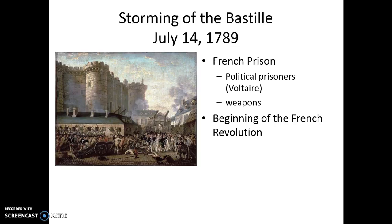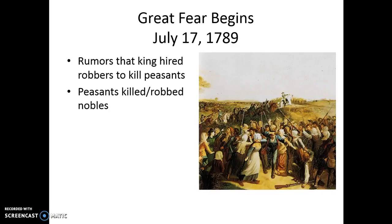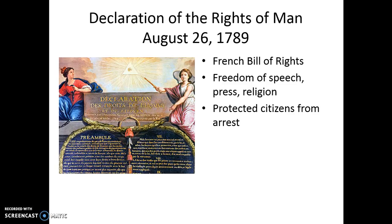The Great Fear began on July 17, 1789, when rumors spread that the King had hired robbers to kill peasants. Plagued with panic, peasants broke into the homes of the nobility and killed and robbed them. The Declaration of the Rights of Man was signed on August 26, 1789 — this is the French version of the Bill of Rights. In this document, people are guaranteed freedom of speech, press, and religion, and there are also protections for citizens against false arrest.